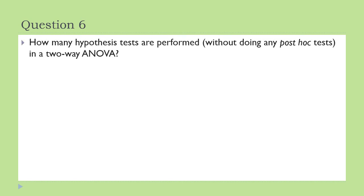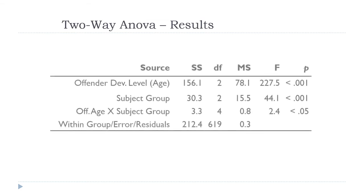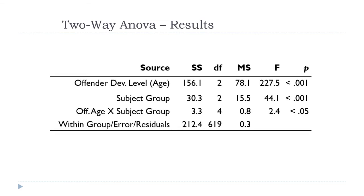How many hypothesis tests are performed, if you don't do any post-hoc tests, in a two-way ANOVA? Here's what two-way ANOVA results look like — results from this data. You've got the offender developmental level with two degrees of freedom (three levels), its sum of squares, mean square, and a huge F of over 200, with P less than .0001.